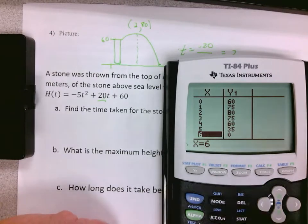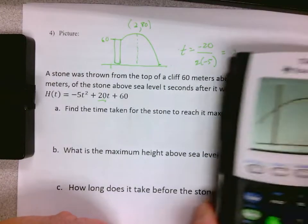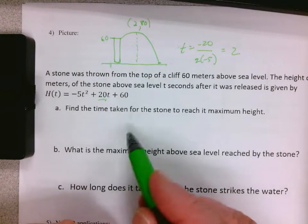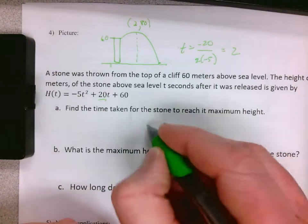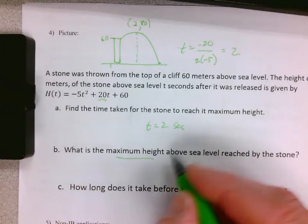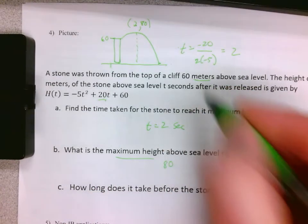Find the time taken for the stone to reach its maximum height - we already did that: t equals 2 seconds. What is the maximum height? 80 meters.